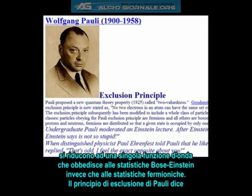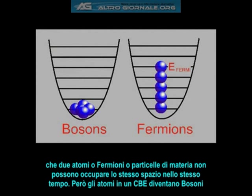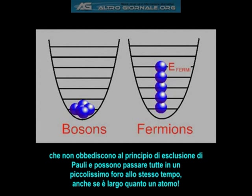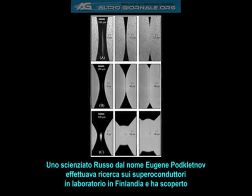The Pauli exclusion principle states that no two atoms, or fermions, or matter particles, can occupy the same space at the same time. But the atoms in a Bose-Einstein condensate become bosons, or force particles, which do not obey the Pauli exclusion principle and can all fit through the tiniest hole at the same time, even if it's only one atom wide — as long as it's wide enough to let one through, they can all fit through at the same exact time.